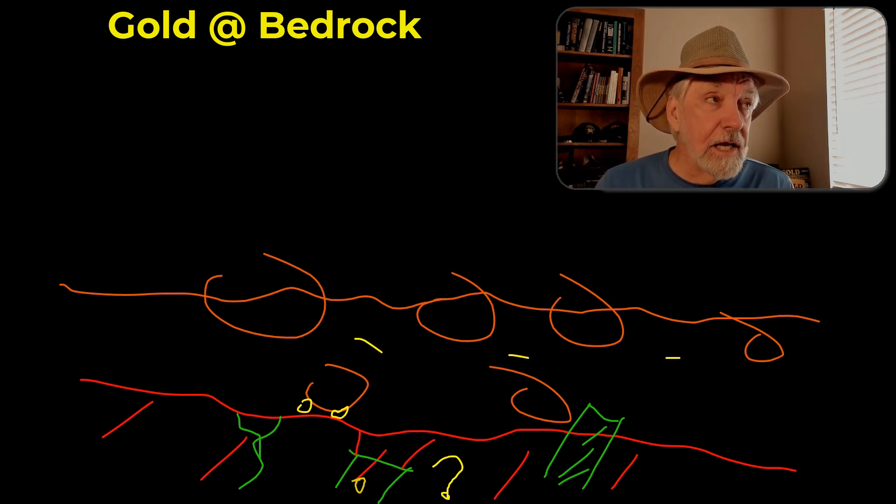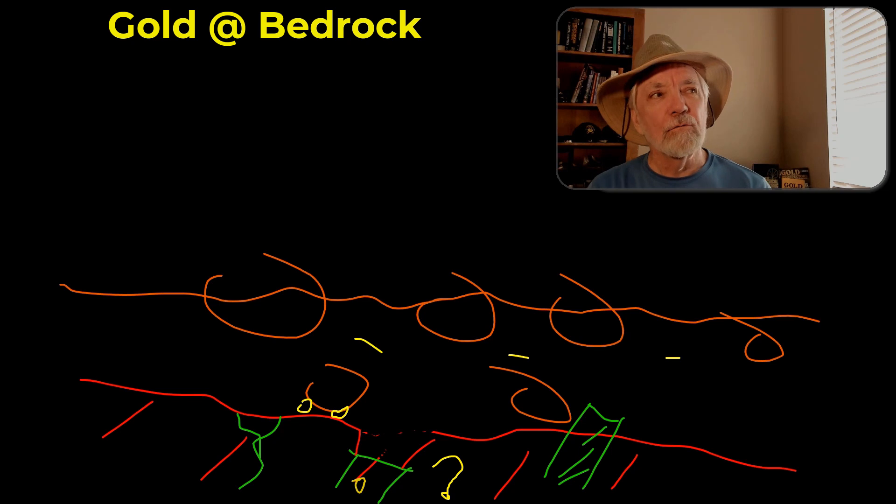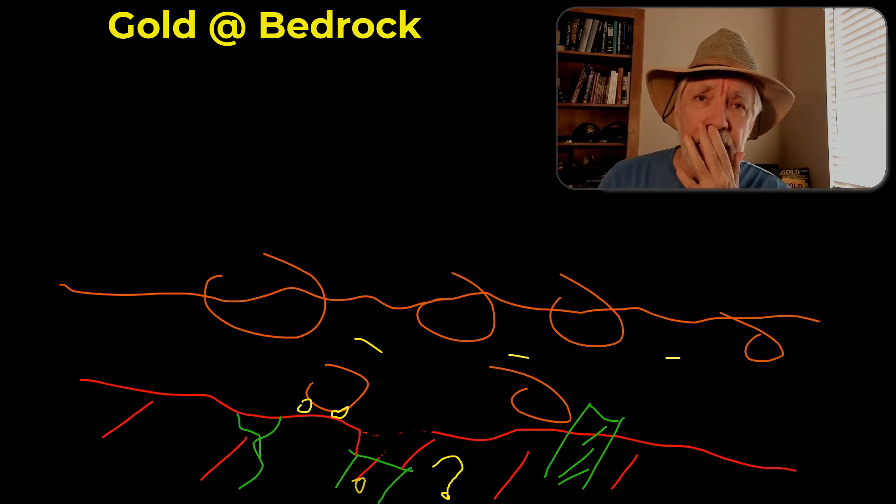That little pocket looks something like this. Let me see if I can—it's taking me a long time to erase this stuff. Now once we have this opening, you can see this looks an awful lot like a sluice box riffle. Yeah, it sure does.